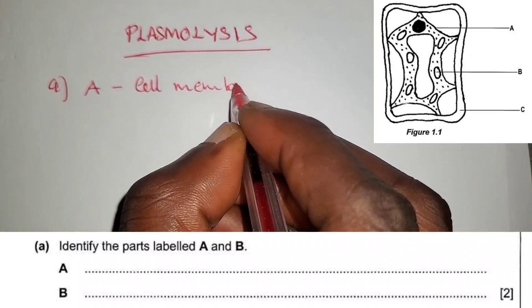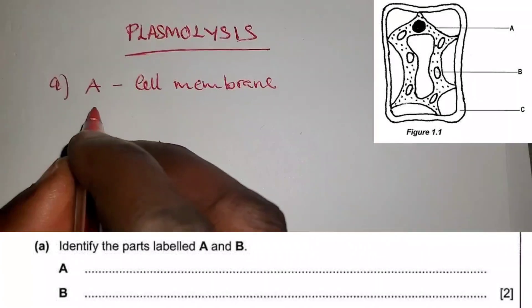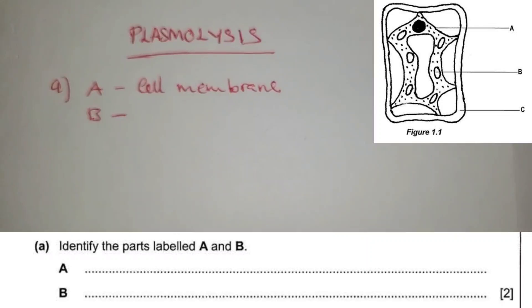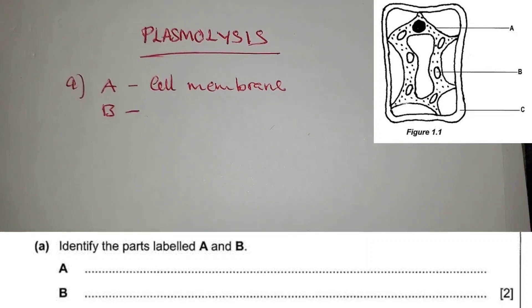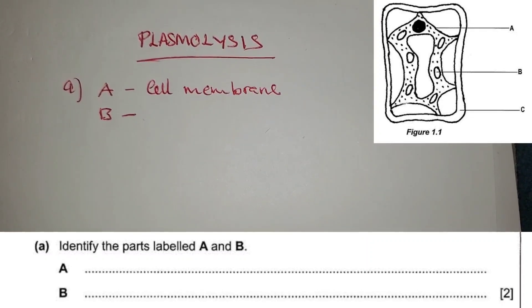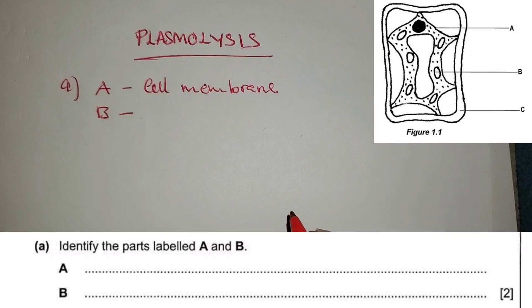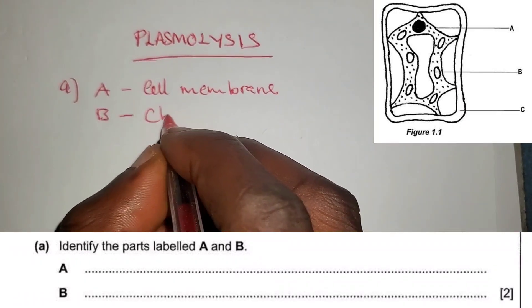B is pointing to those white circles. Those are chloroplasts.